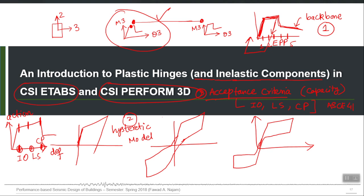IO, LS, and CP are three placeholders or three markers. These numbers — the IO, LS, and CP capacities, whatever values you give on that curve — are just three markers on your curve which the program uses as capacity. They do not affect the analysis result; they are placeholders for three capacities.